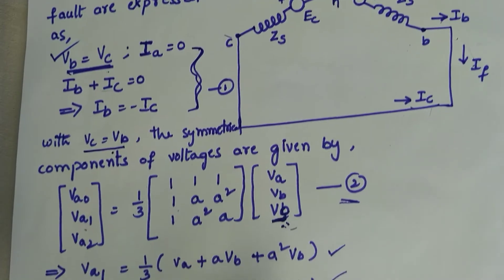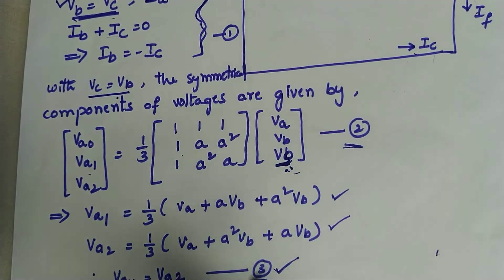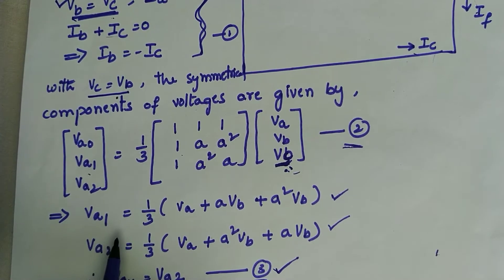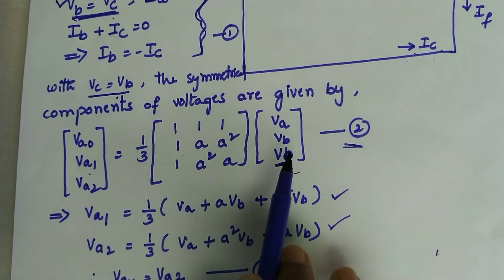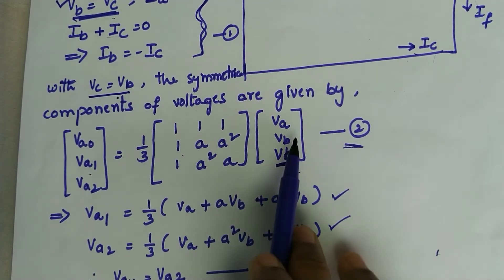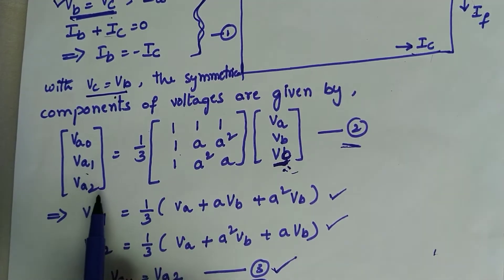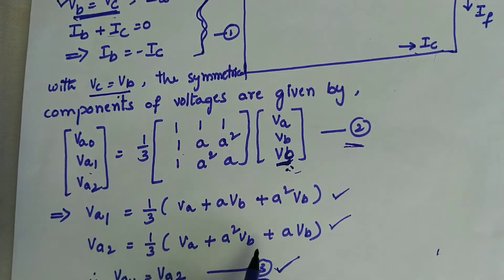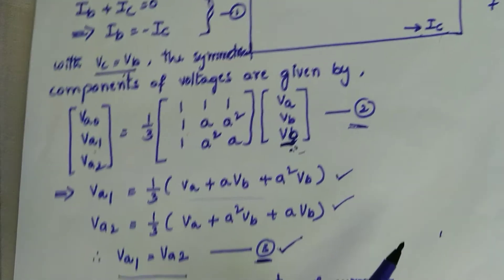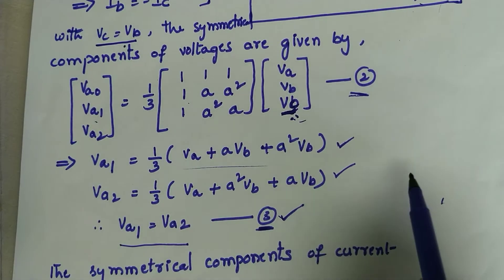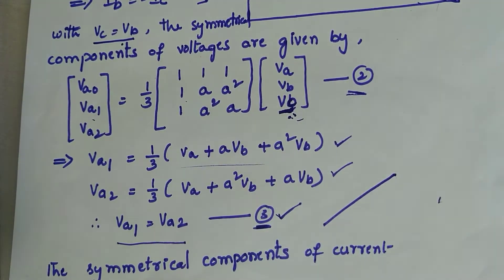We convert this matrix equation into normal equation form. We are more focused on positive and negative sequences because Vb is common. Writing the relations for Va1 and Va2, we can observe that the two equations are the same. Therefore, Va1 equals Va2.